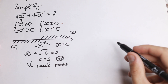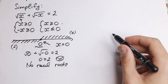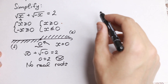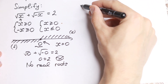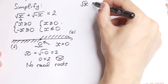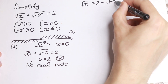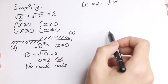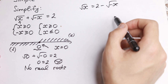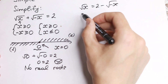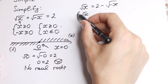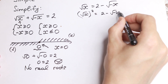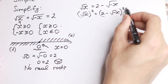But let's find the roots — there will be roots, just not real numbers, but complex numbers. Let's try the second method. We rearrange to get: square root of x equals 2 minus square root of minus x, bringing the square root of minus x to the right-hand side. Then we raise both sides to the second power.